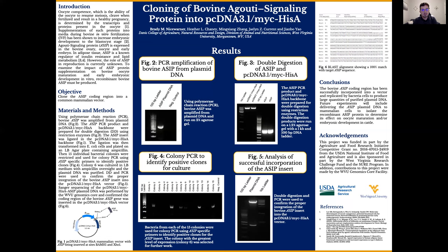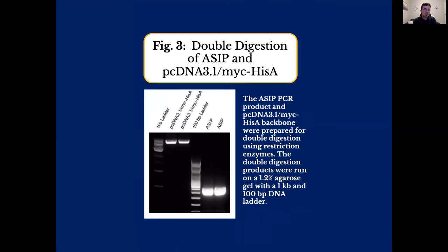From that point, the PCR product and the pcDNA 3.1 Myc/His A backbone were prepared for double digestion using restriction enzymes. The products from that double digestion were then run on a gel, and you can see that the ASIP product shows up right around 400 base pairs and the backbone shows up around 5,500 base pairs.